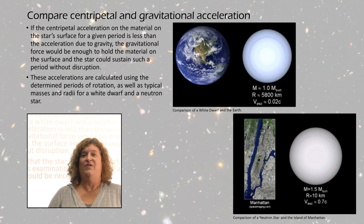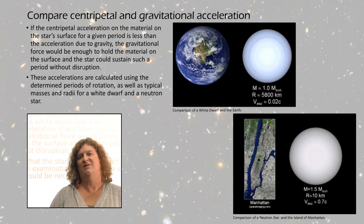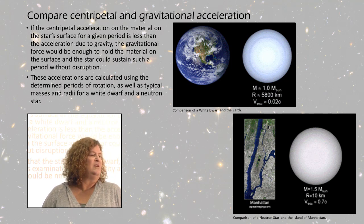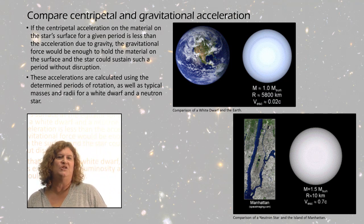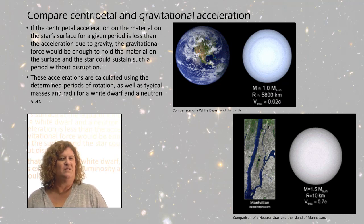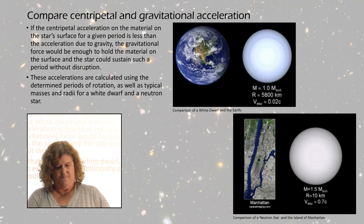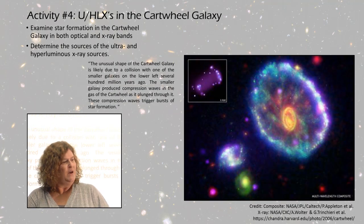If the thing is spinning too fast and your centripetal acceleration is greater than the available acceleration due to gravity, then that probably rules it out as being a white dwarf or a neutron star. If your calculations show it's possible that a star is a white dwarf, further analysis would be necessary, such as looking at luminosity and temperature.